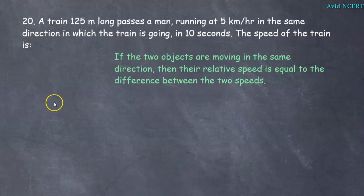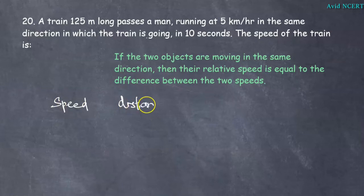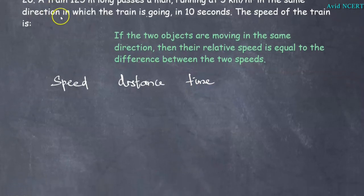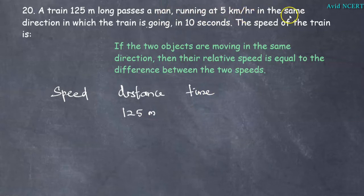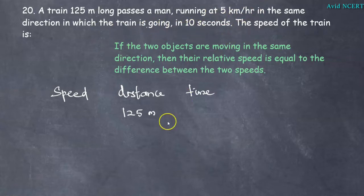The data we have here is speed, distance, and time. From the first sentence, the distance is 125 meters. The man is running in the same direction at 5 kilometers per hour, and the time taken is 10 seconds. The speed of the train is the unknown.